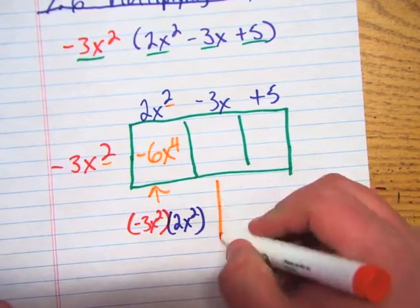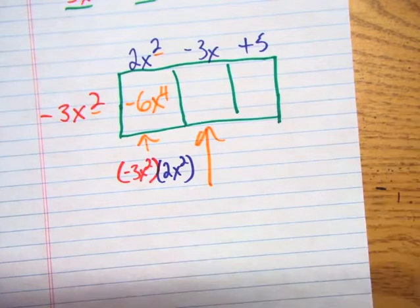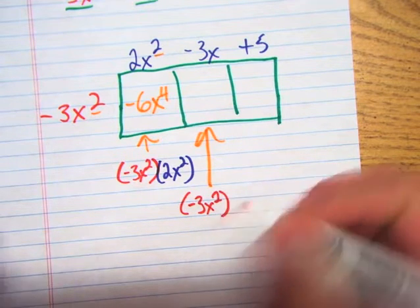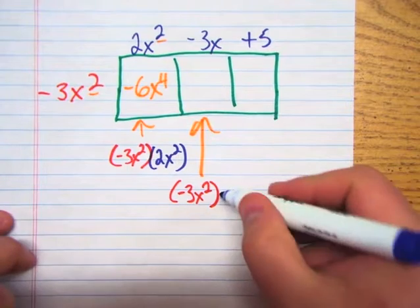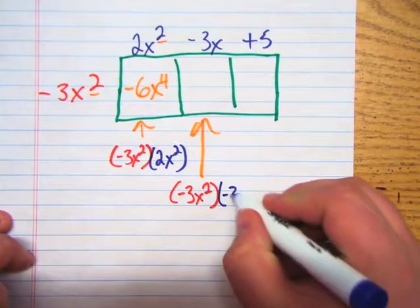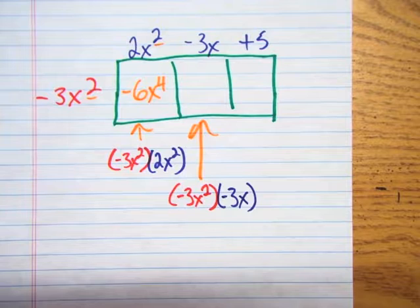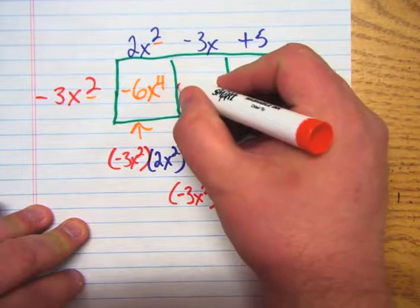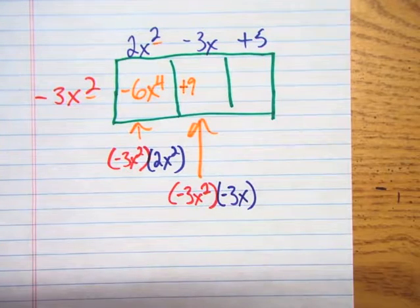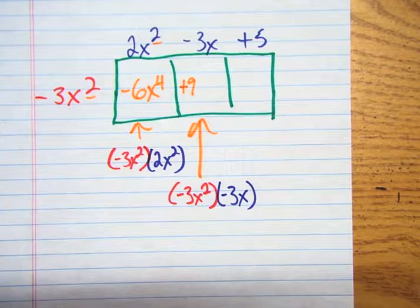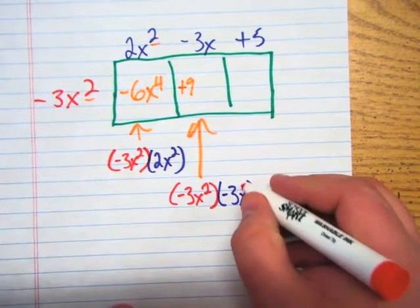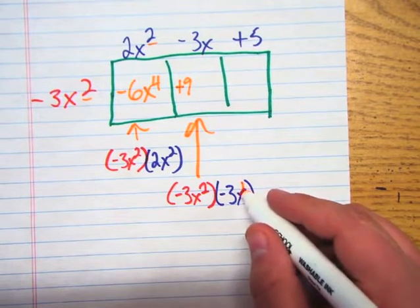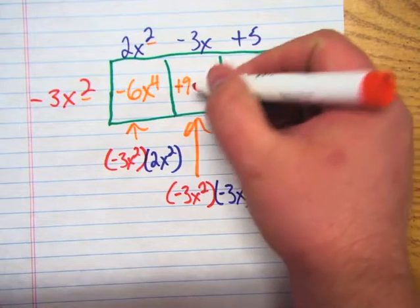So now for the next one, what I'm going to do is I'm going to still multiply by negative 3x squared, and then I'm going to multiply that by negative 3x. So we do the numbers first. What's negative 3 times negative 3? We're going to have a positive 9, and then x to the 3rd, right? Because this is a 1. We didn't write it down, but 1 plus 2 is 3.